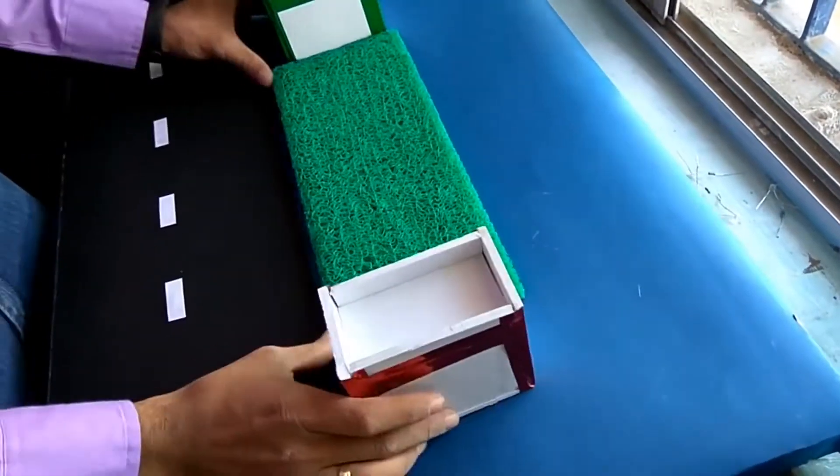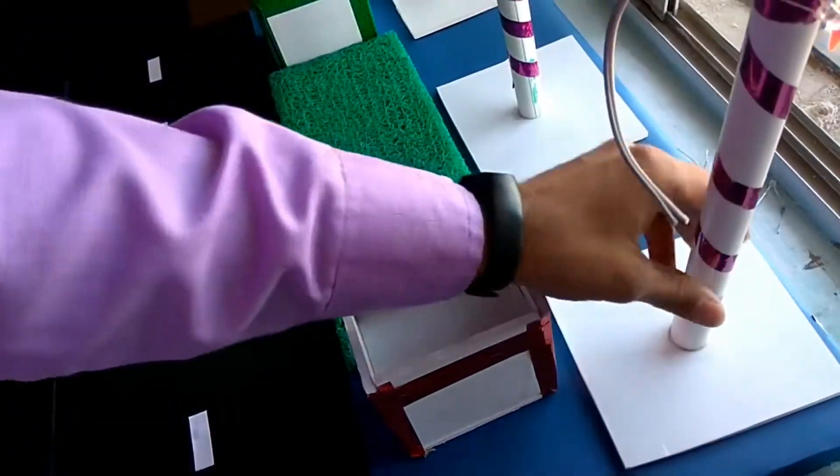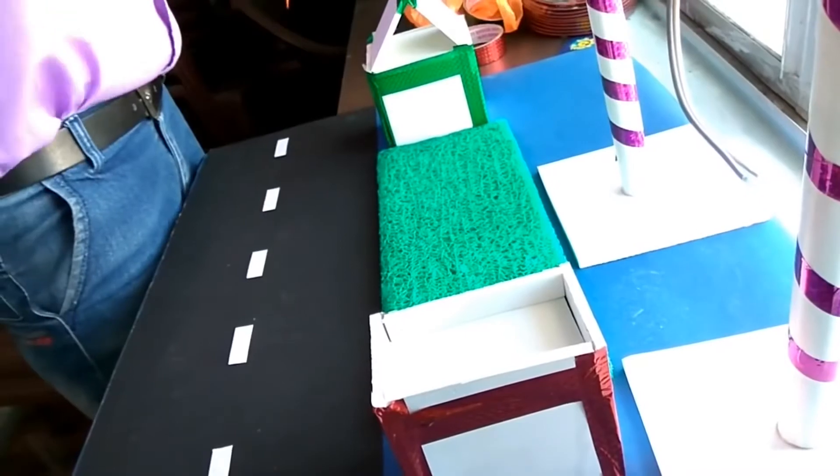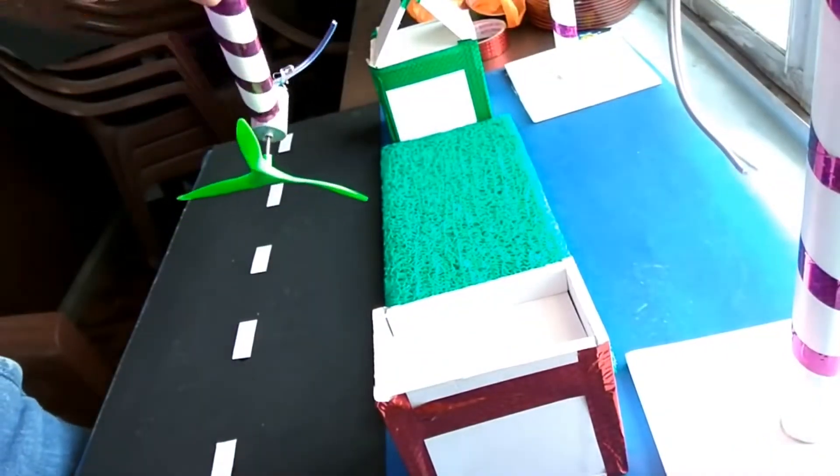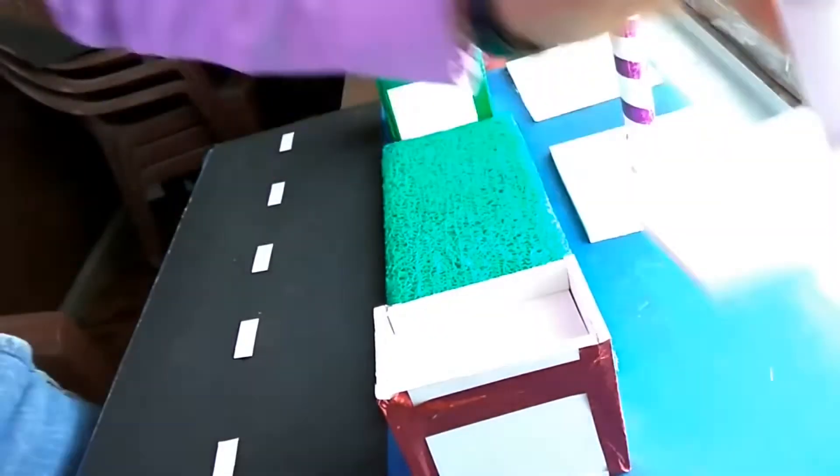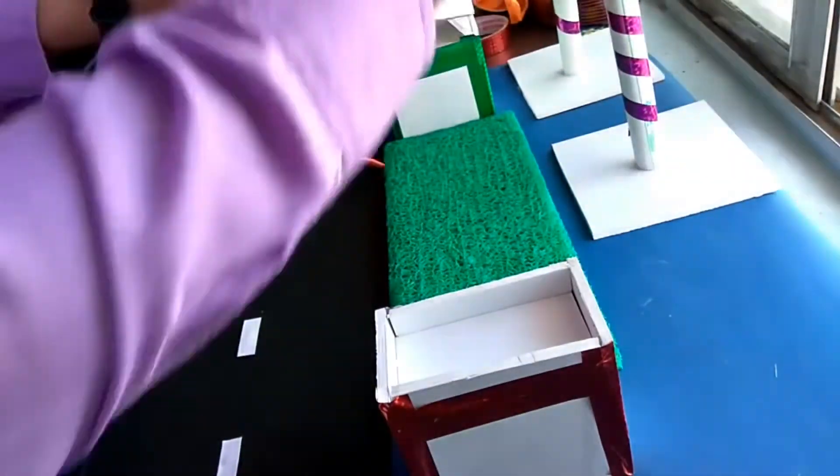For the better look purpose, I am using the grass material so it looks more aesthetically good when you are doing the project. As you can see here, apply fevicol on the base so it will stick on the chart paper and our windmill is about ready.